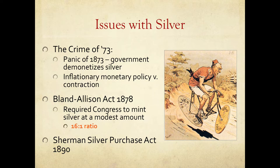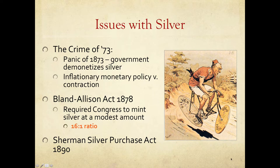Let's go back and talk about the Crime of 73. This refers to what happened with the Panic of 1873, that economic downturn. The government decided, amongst other things, to stop minting silver coins through the Coinage Act. Farmers were enraged and called it the Crime of 73. Farmers like inflationary monetary policy — they want more currency in the system. They want bimetallism: using both silver and gold.